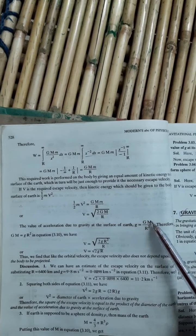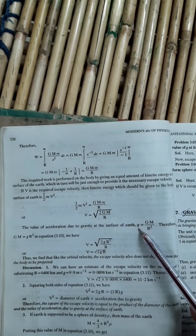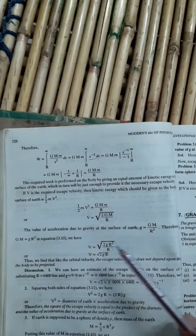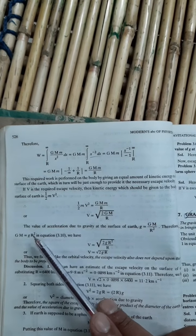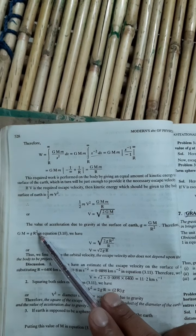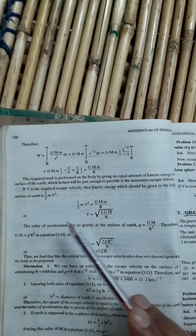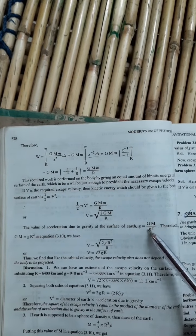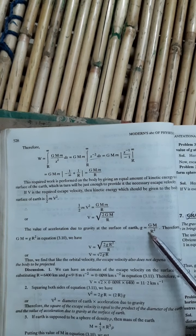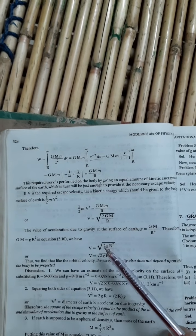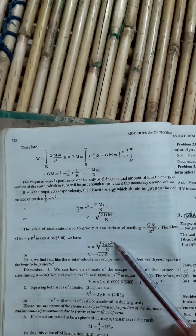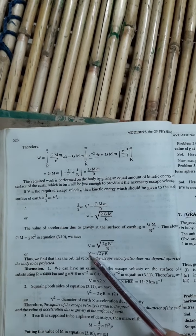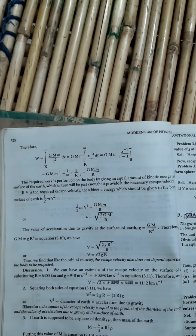But you know what is GM upon R square? This is called small g. Or from here I can write GM is equal to gR square. From here only I can find out on the surface of Earth what is gravitational acceleration. So from here, 2gR square, R and its square will get eliminated. So it is left V is equal to under root 2gR.